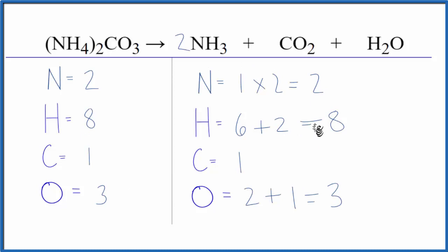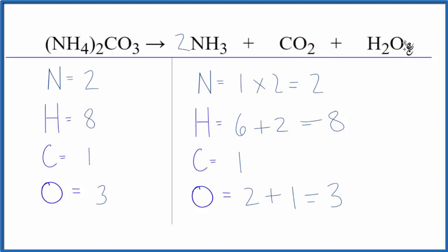There are two places people have problems. One is they have the two here and they apply it to the hydrogen, but they don't apply it to the nitrogen — this two applies to everything in parentheses. The other problem is they'll count the three hydrogens and forget about these two, or they'll count the two oxygen atoms and forget about this one over here. Those will cause a lot of problems if you don't do that right.